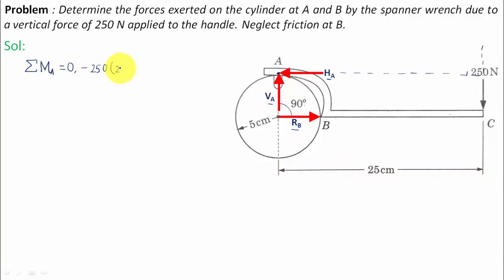If you drop a perpendicular from point A, this distance has been given as 25 centimeters. Now keep your right hand thumb over here and move your baby finger along this direction. The force RB produces an anti-clockwise moment, hence a positive sign. The perpendicular distance represents the radius of the cylinder which equals 5 centimeters. Solving this equation, the value of RB equals 1250 Newtons.